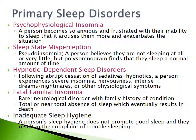Fatal familial insomnia is a very rare neurological disorder with family history of the condition, where people experience total or near-total absence of sleep, eventually resulting in death. Inadequate sleep hygiene isn't really a type of insomnia, but when people don't practice habits that promote good sleep they develop complaints of trouble sleeping. Improving sleep hygiene can help some patients, but for those with true insomnia it is not a cure-all — though good sleep habits are something everyone should practice.